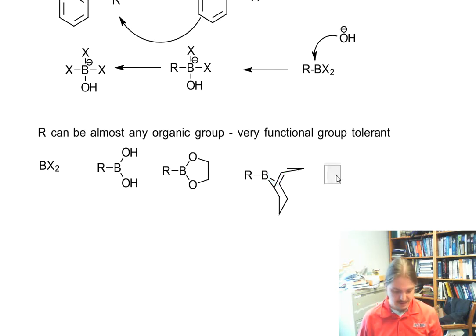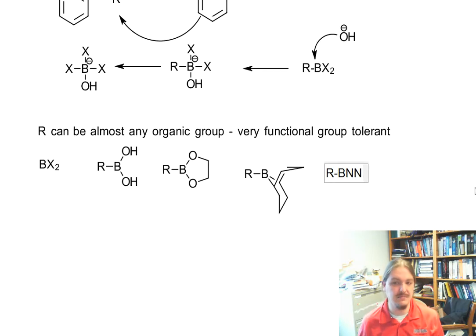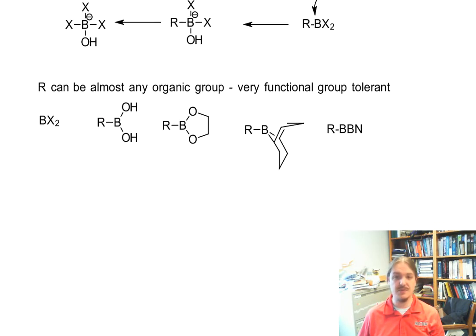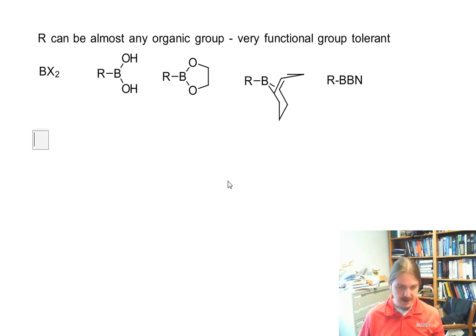So this is like R-BBN. So there are a lot of different opportunities in what the boron thing can be. There are a lot of different functional groups. The arene can have almost any other substituent on it. The R group can have almost any other substituent on it.